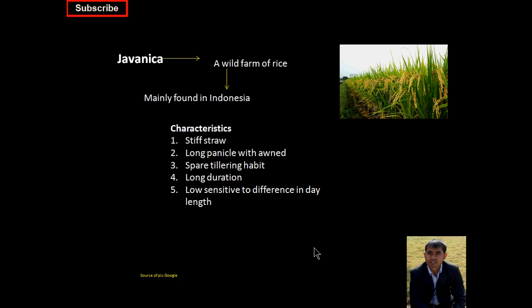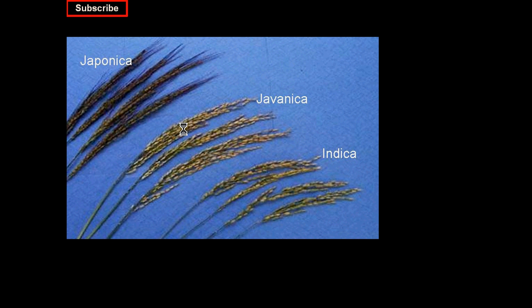Moving to Javanica — this is actually a wild form of rice and is mainly grown in Indonesia. The basic characteristics are: stiff straw, long panicle with awns, and sparse tillering habit, long duration. One of the unique characteristics of this rice is that it is low-sensitive to differences in day length, meaning its flowering pattern is not much governed by day length. You can see here the panicle of the Javanica — and this is the panicle of Japonica. All three are very contrastingly different from each other.